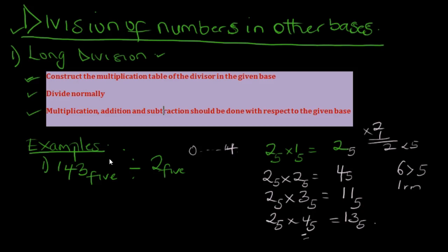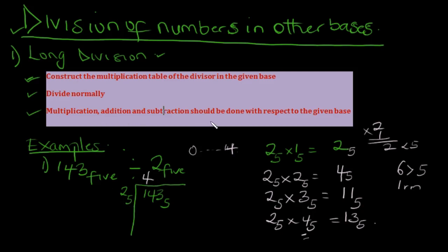Now we divide normally. We have 1443 in base 5 divided by 2 in base 5. 2 into 1 is impossible, so we take 14. We look for the closest number to 14 in our table — that's 13, which is 2 multiplied by 4. So 2 base 5 goes into 14 four times. We write 4, and 2 base 5 multiplied by 4 gives 13 in base 5. We write 13 and subtract: 14 minus 13 — that's 1 remainder. We bring down the next digit, 3.